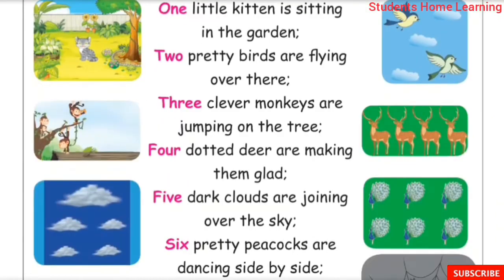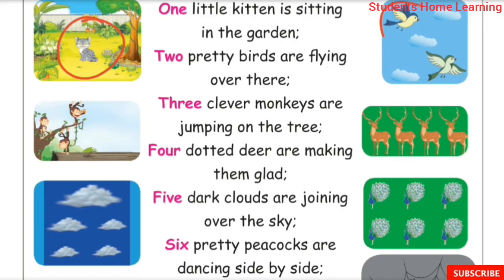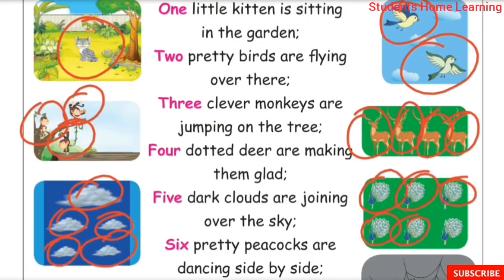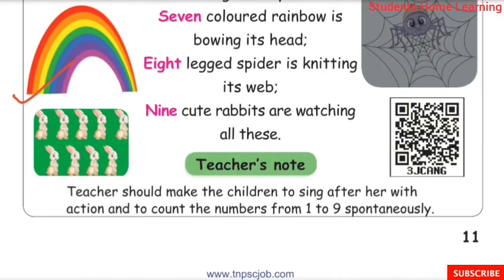Numbers 1 through 9 each have pictures: 1 kitten, 2 birds, 3 monkeys, 4 deer, 5 clouds, 6 peacocks, 7 rainbow, 8 eight-legged spider, 9 rabbits.